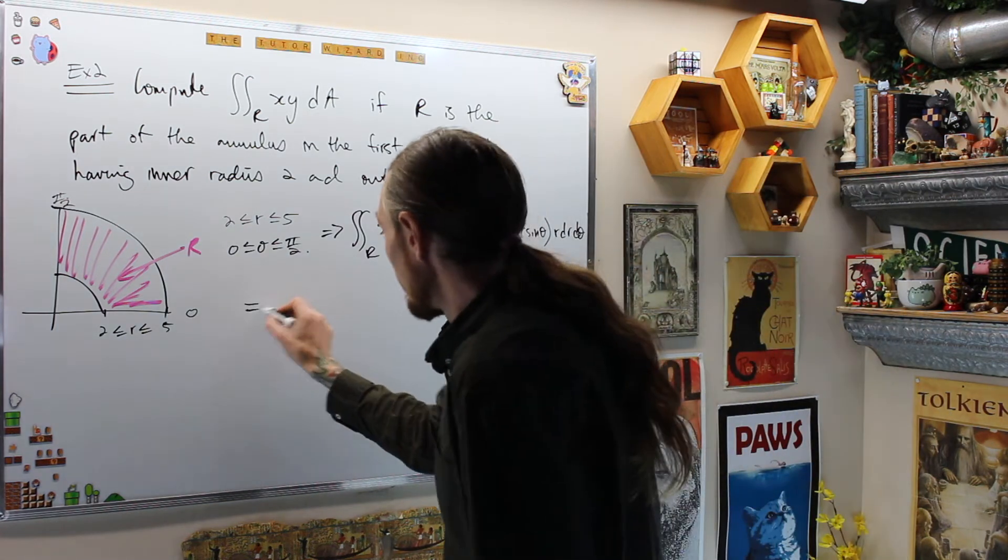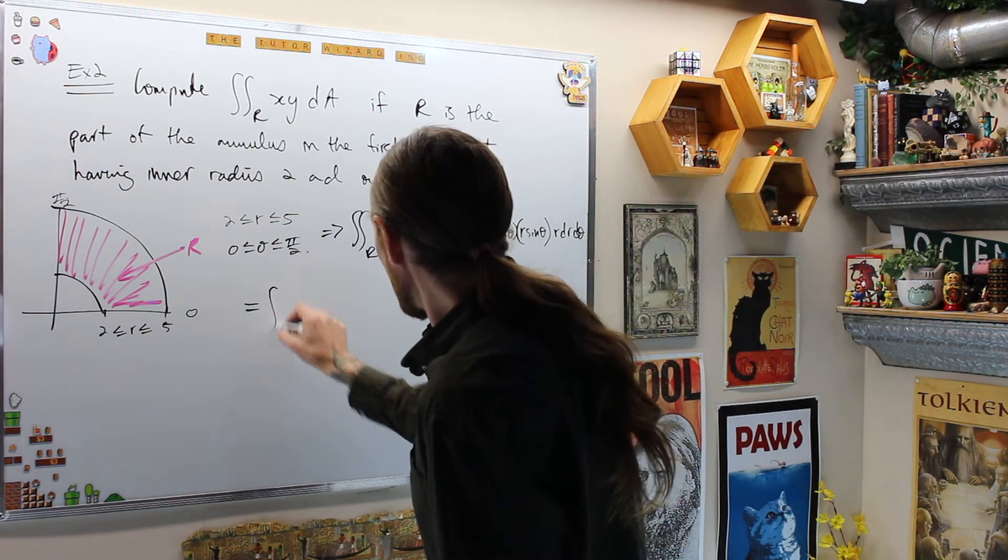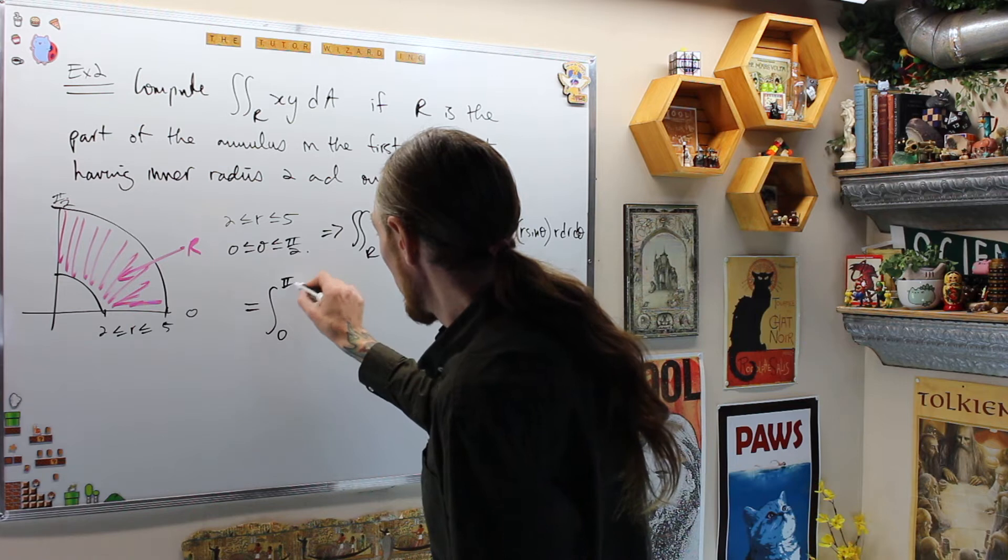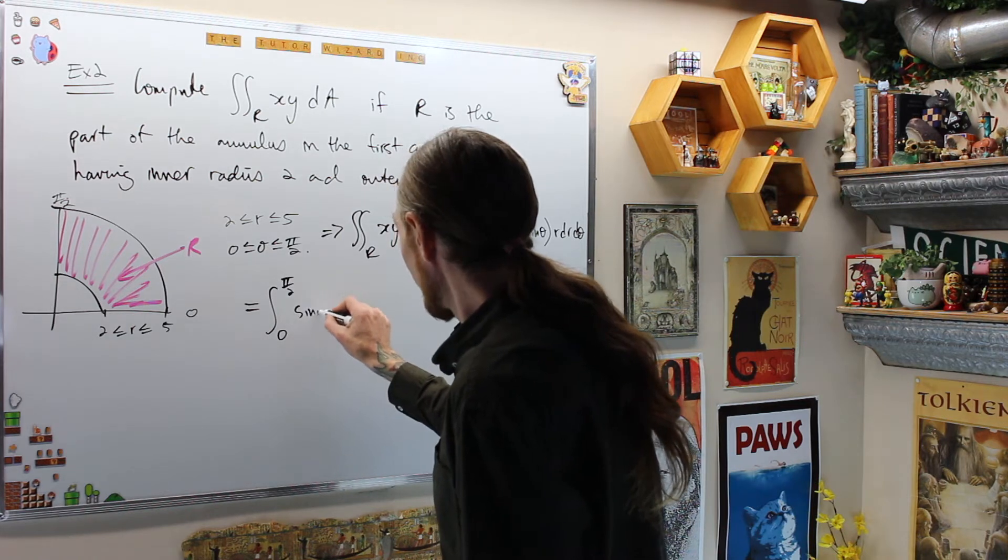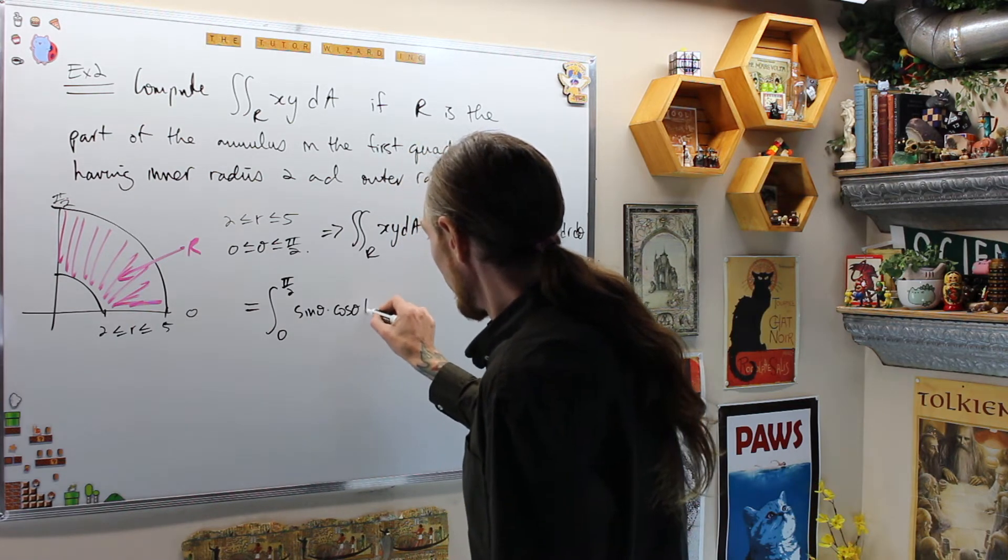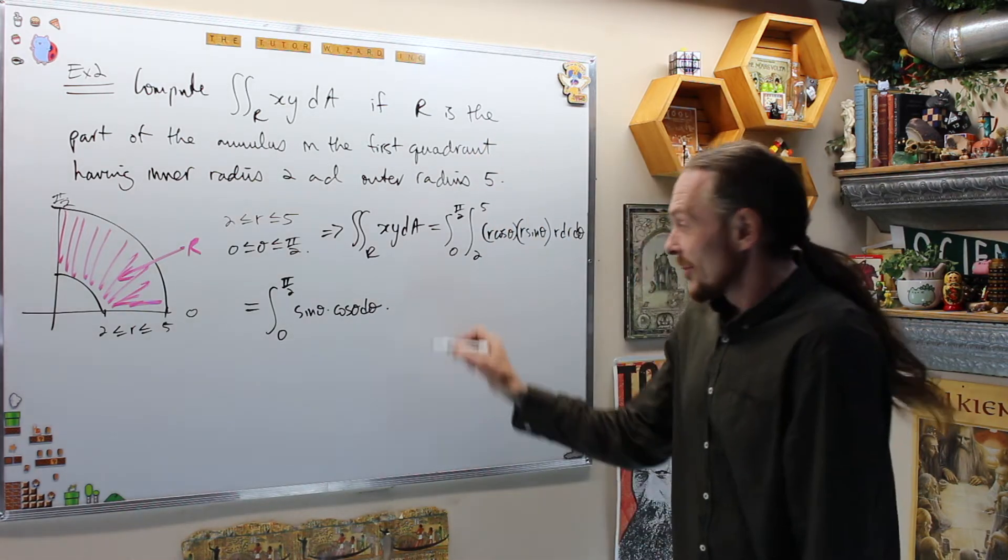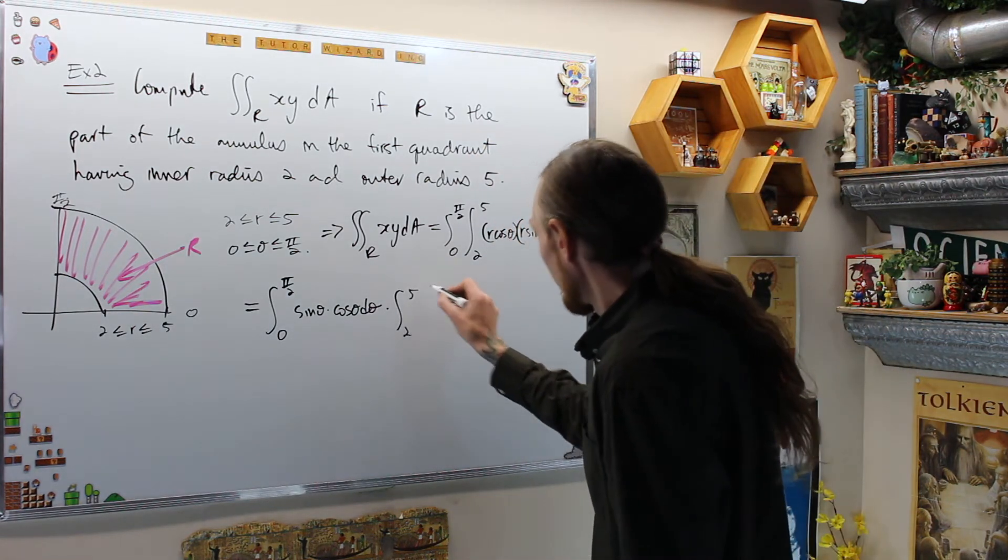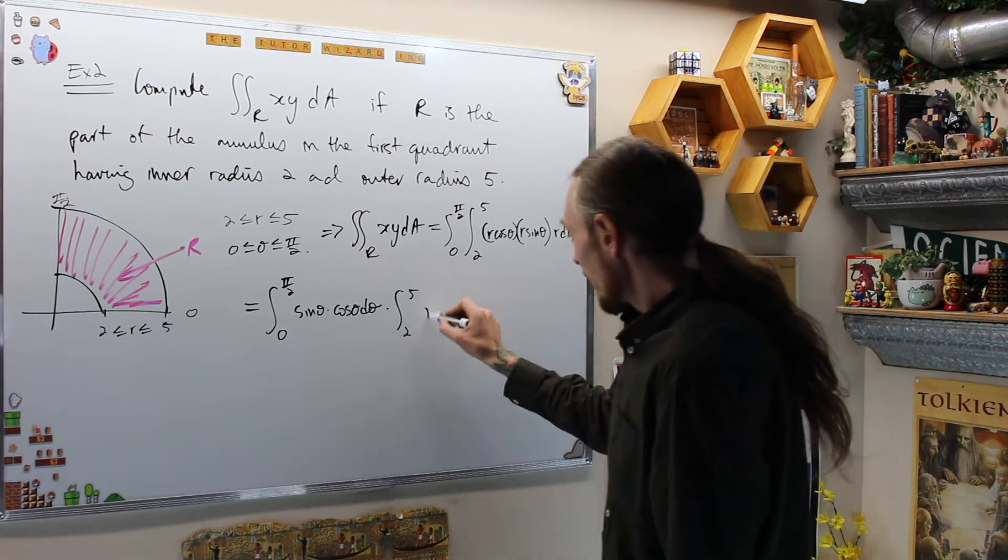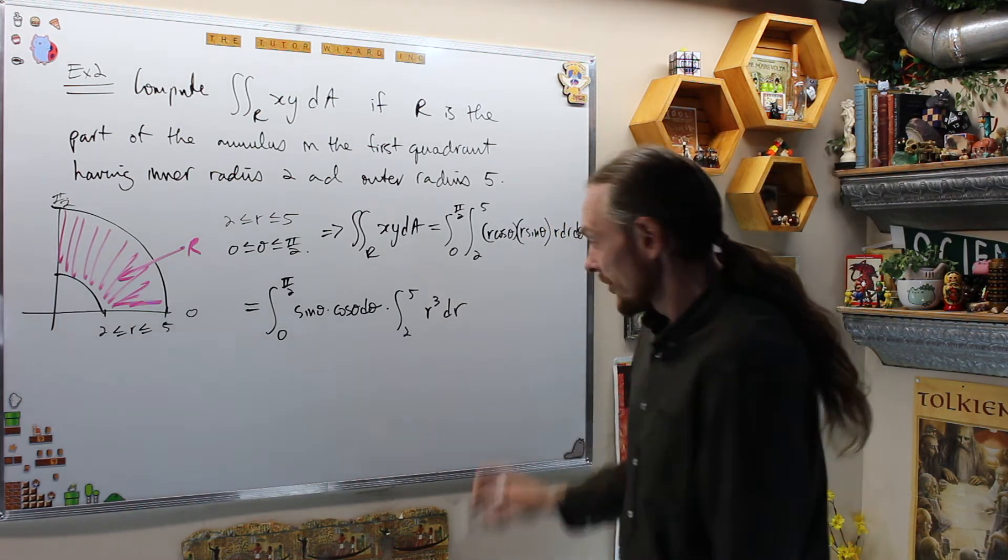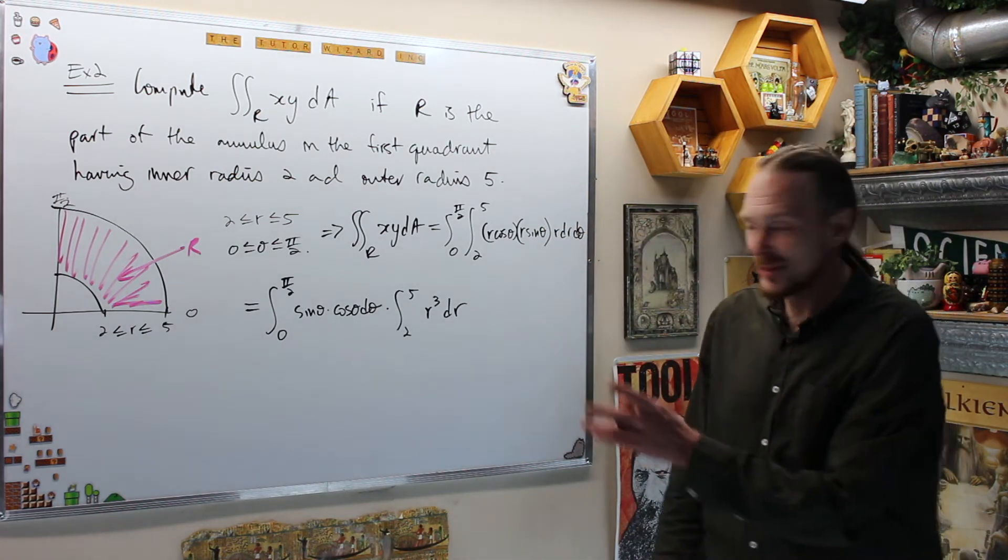Let's clean that up a little bit. This is equal to the integral from 0 to pi over 2, sine theta, times cos theta, d theta, times the integral from 2 to 5 of 1, 2, 3, r cubed, dr. So again, I split it for convenience because they're separated.